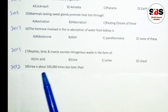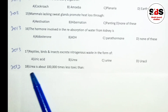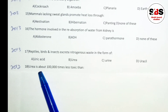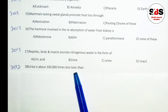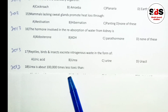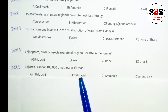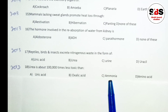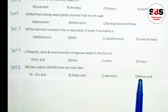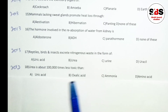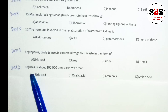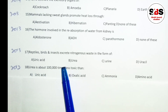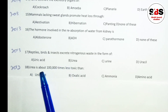Question number 18 (asked in 2012): urea is about one lakh times less toxic than which substance? Options are uric acid, oxalic acid, or ammonia. The correct answer is ammonia — urea is 1 lakh times less toxic than ammonia.